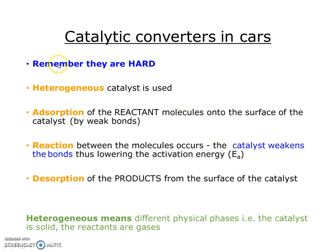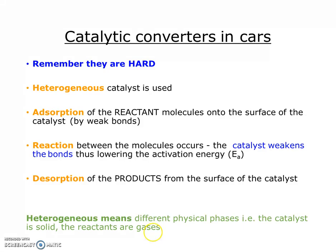How do catalytic converters work? They are heterogeneous catalysts — they use adsorption, the reaction occurs, and then there is desorption. Heterogeneous means hetero means different, so we've got different physical phases between our catalyst and our reactants. In this case, our catalyst is a solid and the reactants are gases. If it was a homogeneous catalyst, the reactants and the catalyst would be in the same physical state, which is usually a liquid state.